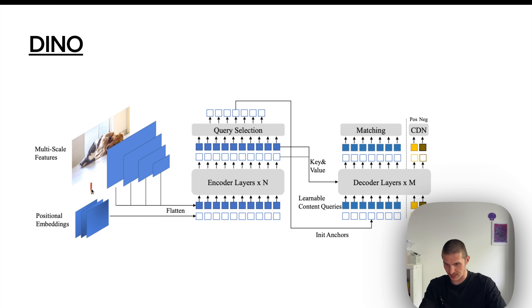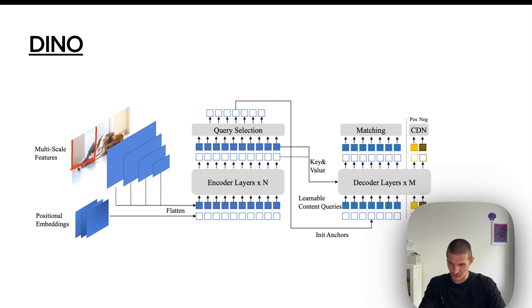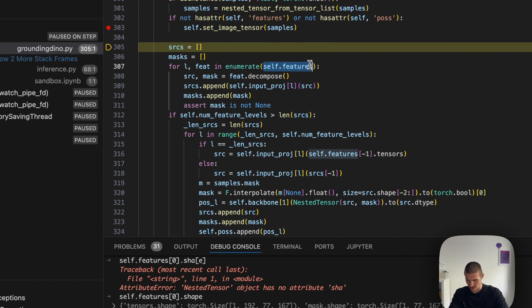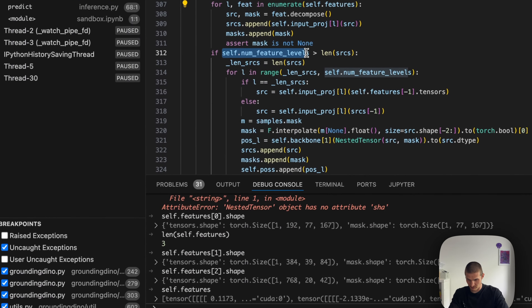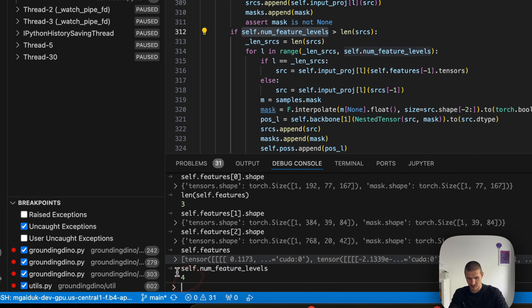This corresponds to the multi-scale input where our backbone is Swin Transformer, which divides the image into patches, performs a series of shifted window attention operations, and then patch merge operations to scale down the resolution while increasing the embedding size. All of these will be passed into the transformer — not just one scale, but three in our case. However, num_feature_levels is four — so we have three feature scales from the backbone and we want four.